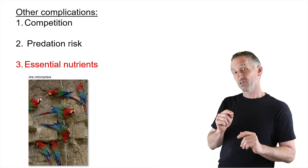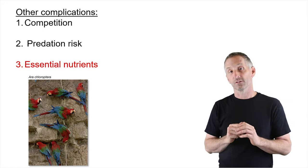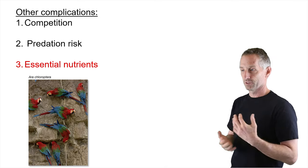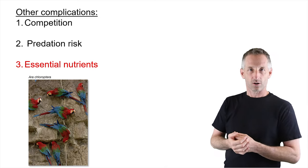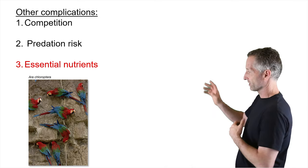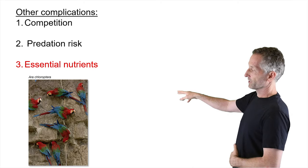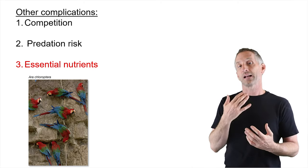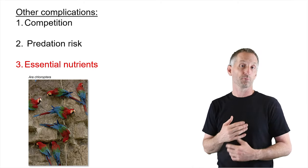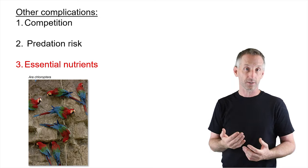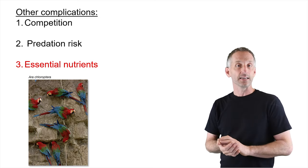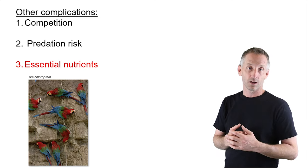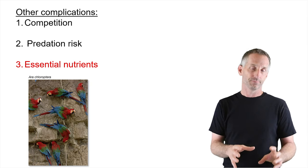Another complication is that certain nutrients found in certain locations make animals do seemingly paradoxical things — such as a series of macaws and other parrots that will feed on clay banks in the Amazon and other tropical places. These provide particular things they need to maintain themselves that aren't just about energy.